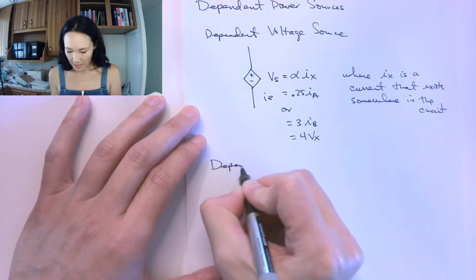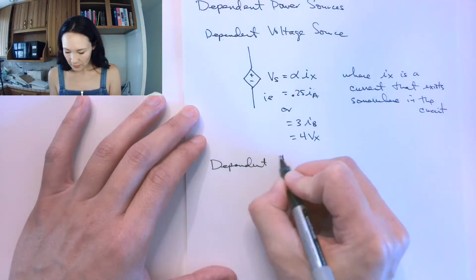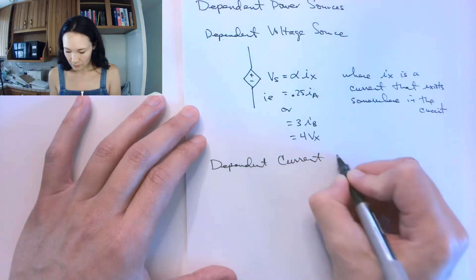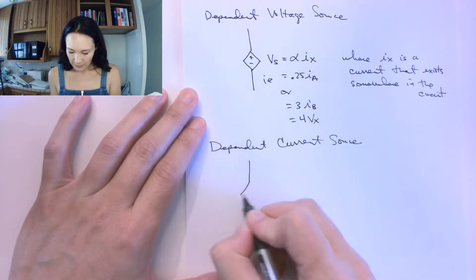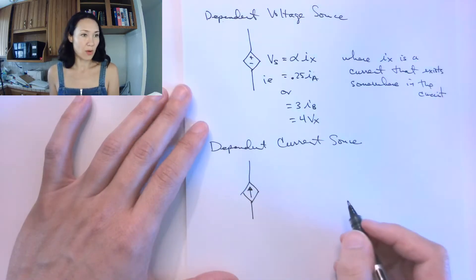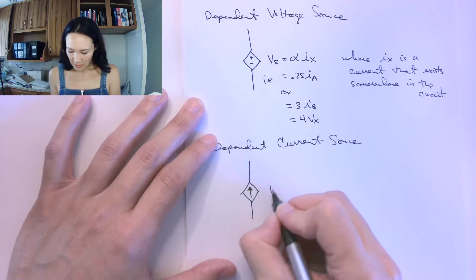Similarly, for dependent current sources, the schematic symbol is also a diamond, but this one has an arrow. The arrow can point up or down, indicating the direction of current flow.